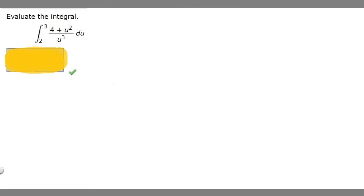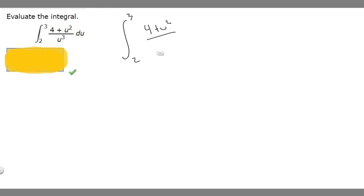In this problem we're told to evaluate the integral from 2 to 3 of (4 plus u squared) over u cubed du. Let's start off by rewriting our integral, from 2 to 3, of (4 plus u squared) over u cubed.